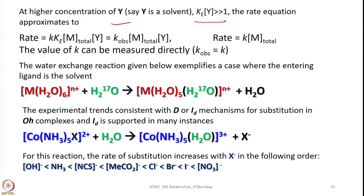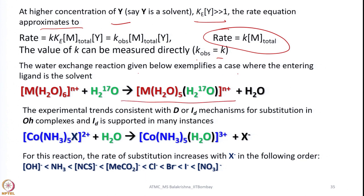At higher concentration of Y where Y is the solvent, Ke[Y] will be much greater than 1, the rate equation further simplifies and the value of K can be measured directly as K-observed equals K. The water exchange reaction exemplifies a case where the entering ligand is the solvent. The experimental trends are consistent with D dissociative or Id mechanisms for substitution in octahedral complexes, and Id is also supported in many instances with experimental data.